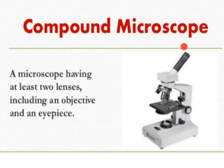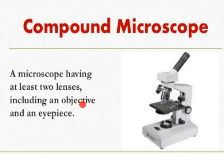So what is a compound microscope? A microscope having at least two lenses, including an objective and an eyepiece. We know that in a simple microscope, we have used one lens, and in a compound microscope, we use two lenses, including an objective and an eyepiece.